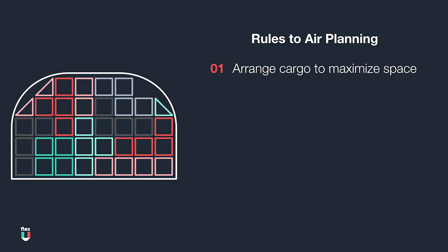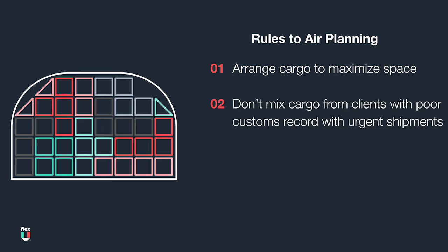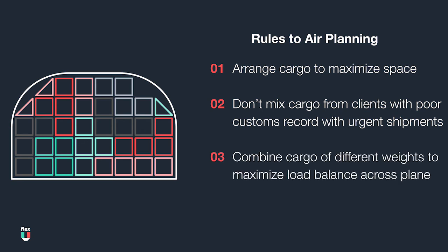The overarching rules of the planning game are: first, arrange all pieces to maximize the utilization of space; second, don't mix customers with bad customs records with urgent ones, because the whole ULD can get held; third, combine pieces of different weights to maximize the load balance requirements across the plan. We will be diving into this last point in particular in a later section.